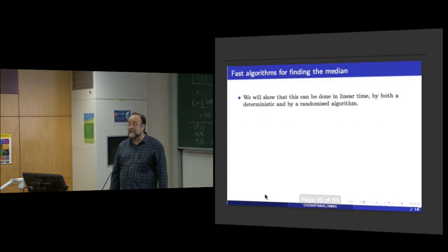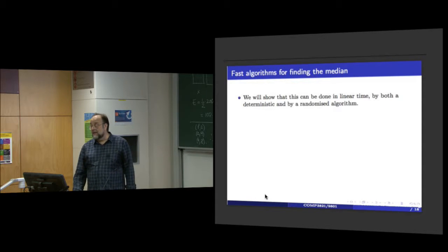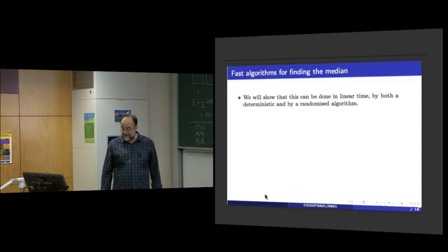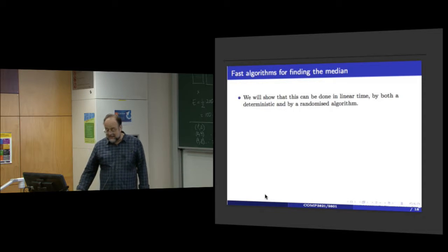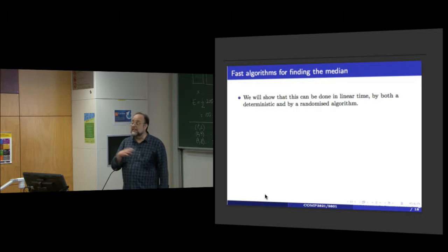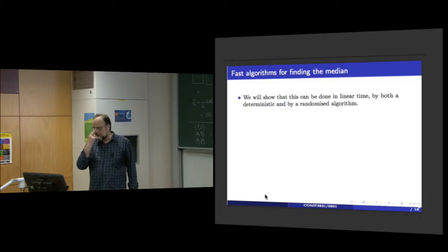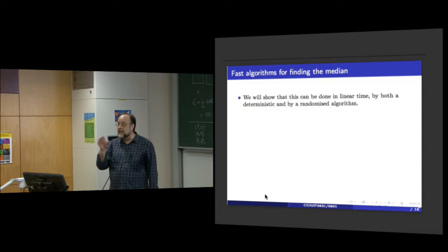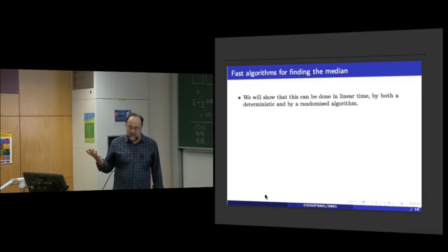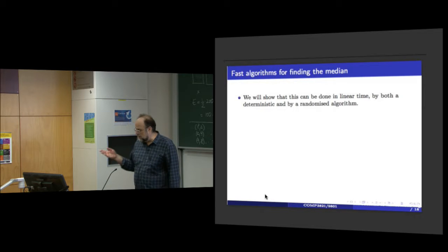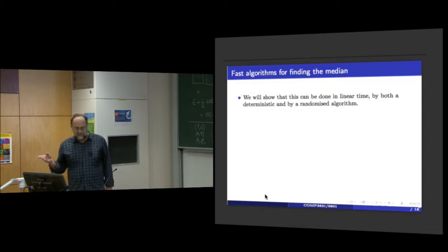Whenever something is expected time, this is tricky, because it guarantees only that on average the performance will be good, but in any individual case the performance can be bad.